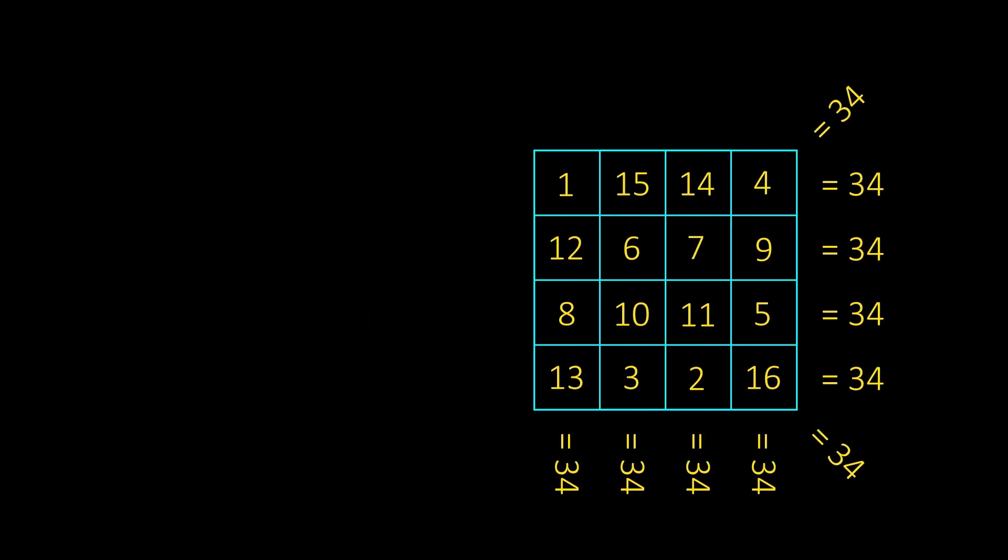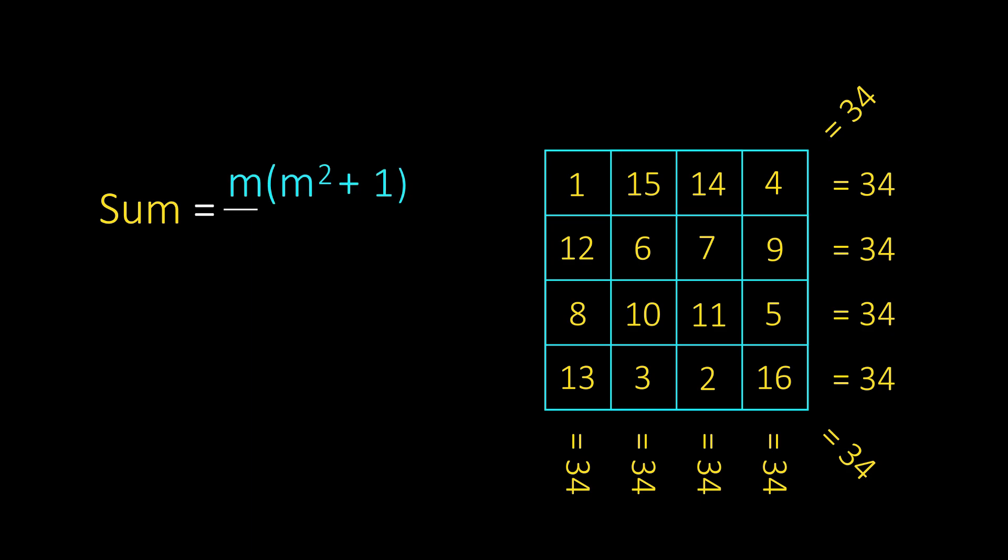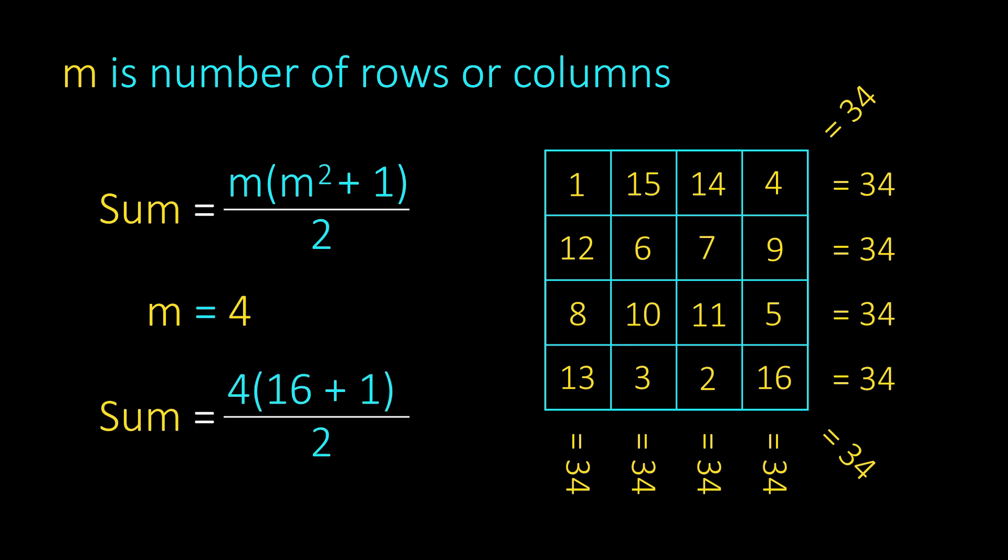The value of the sum is always equal to m times m squared plus 1 divided by 2. In this case m is 4, so sum is 4 times 16 plus 1 divided by 2, which equals 34.